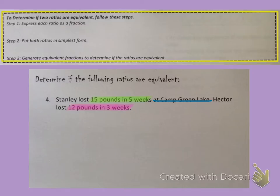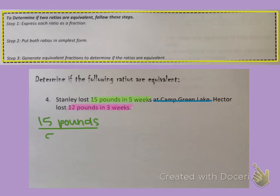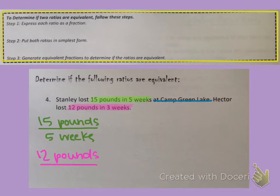Let's write Stanley's weight loss as a ratio: 15 pounds over five weeks, written as a fraction. Now we'll do the same thing for Hector — he lost 12 pounds in three weeks. So we have done step one; we have expressed each ratio as a fraction.